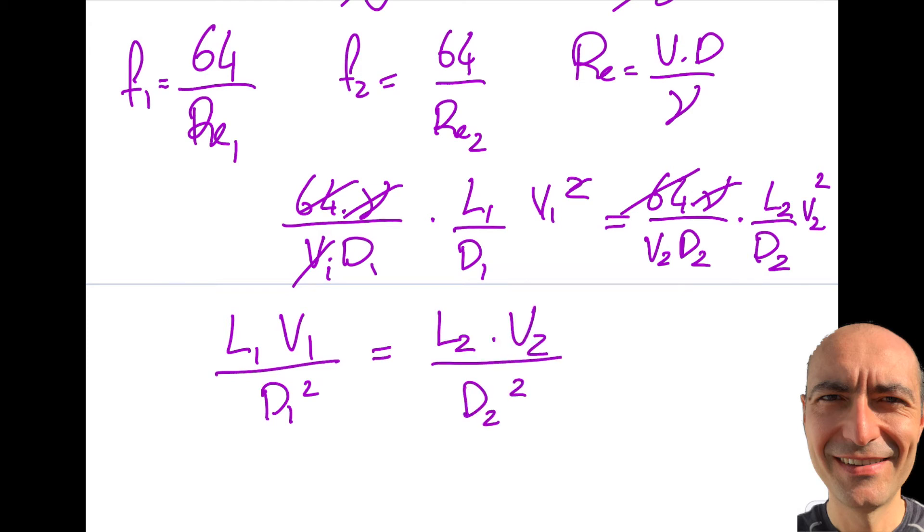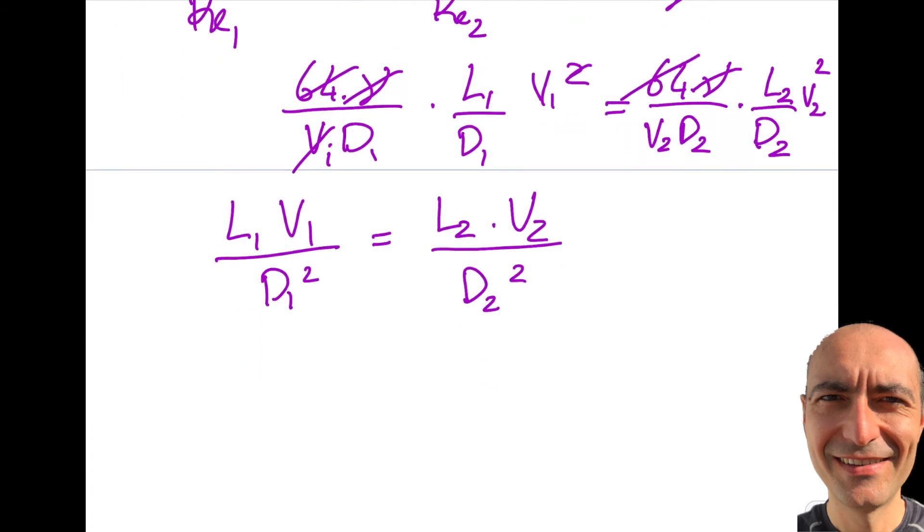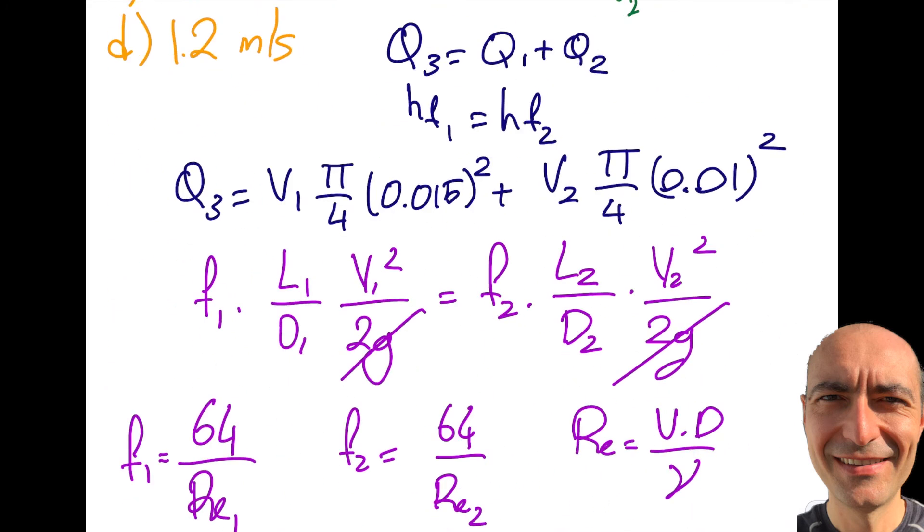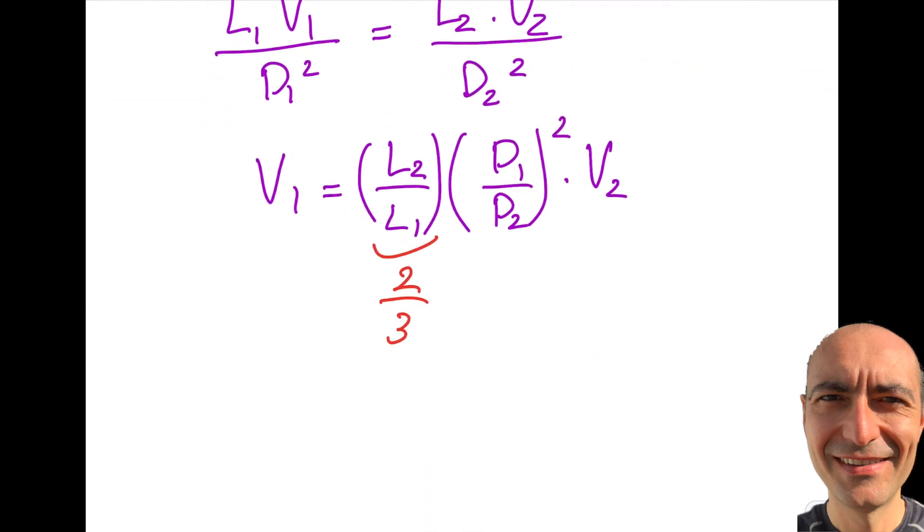Let's just leave V1 alone. V1 will be equal to L2 by L1 times D1 by D2 squared times V2. This will be two thirds. D1 over D2: D1 is 1.5, the bottom is one centimeter. As I'm dividing side by side I don't have to convert the meter, so this ratio will be 1.5 squared times V2.